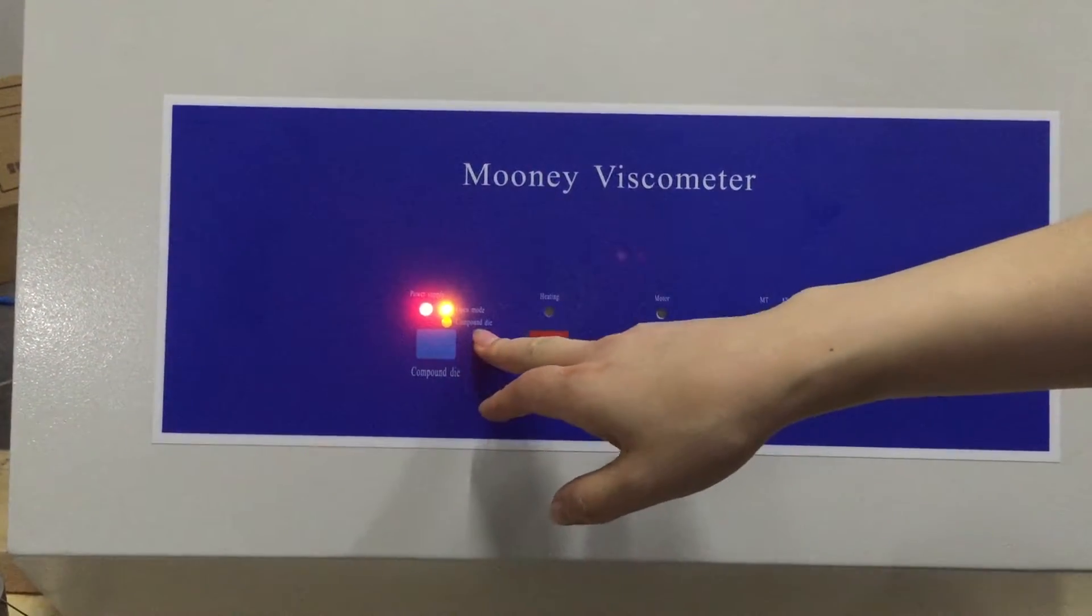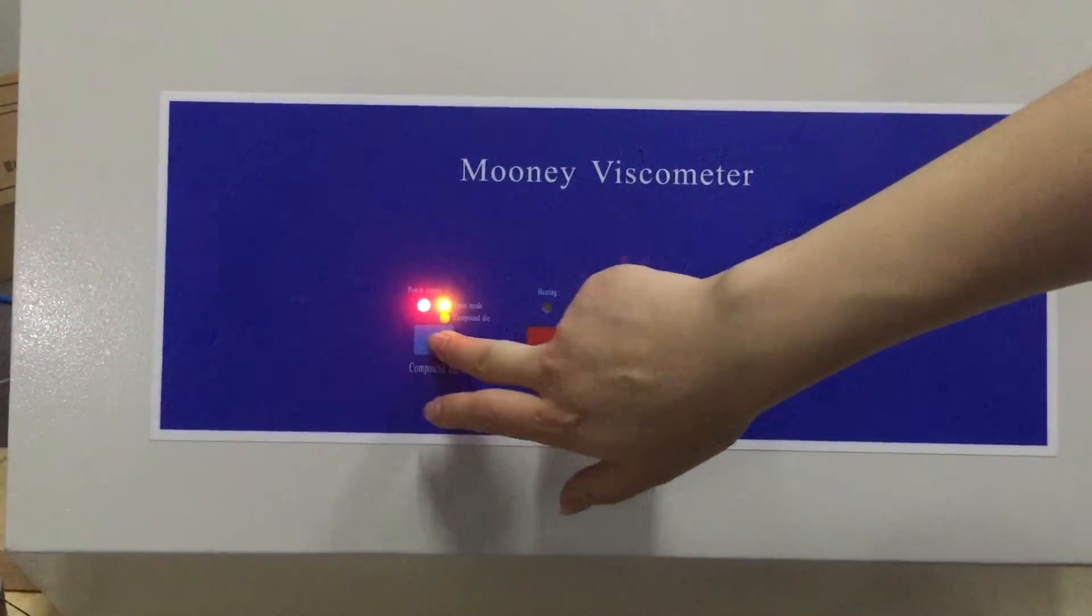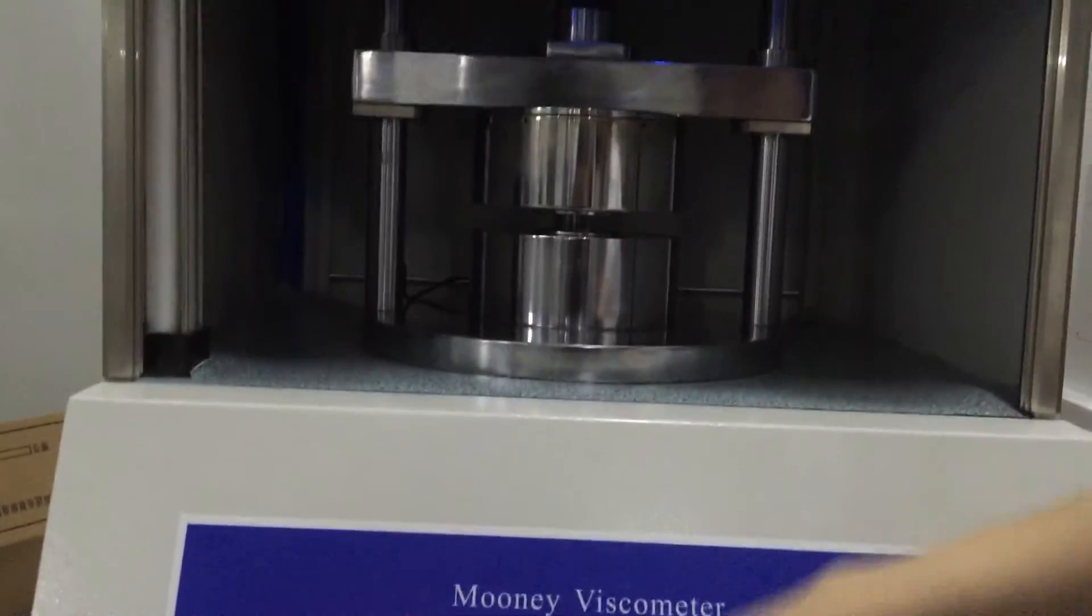And this one is to compress the die. If we click this switch, it will close and the door will close too. Then we press again, it will open the door.